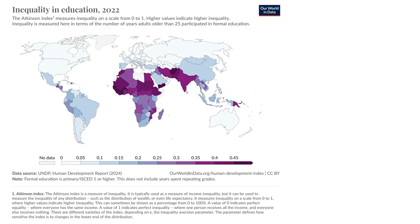If you look at the map on your slide, this is a world map of inequality in education for 2022, based upon data from the UNDP Human Development Report of 2024 — the latest report we have. An inequality measure referred to as the Atkinson Index of Inequality has been calculated for education in all countries of the world. This index ranges from 0 to 1, and in the map, values range from about 0 to 0.5, with higher values indicating higher inequality.